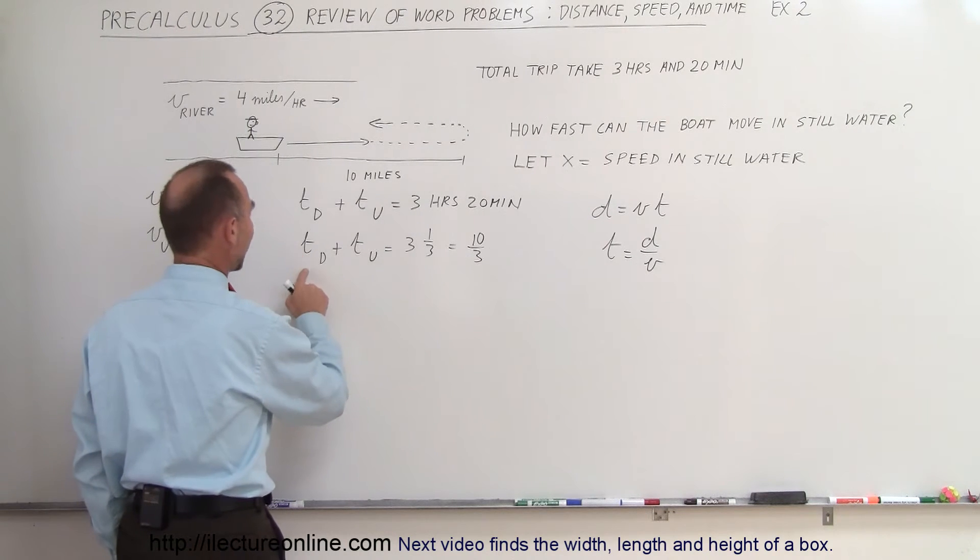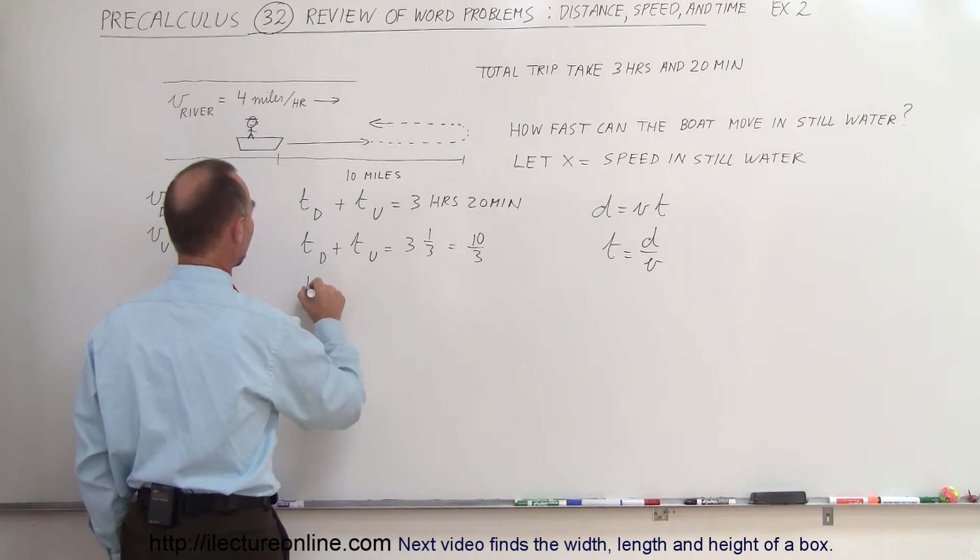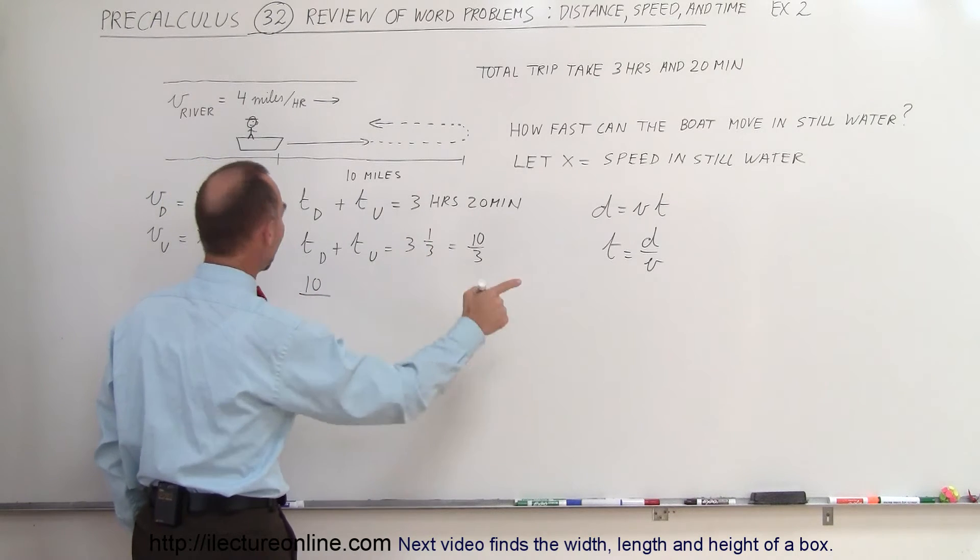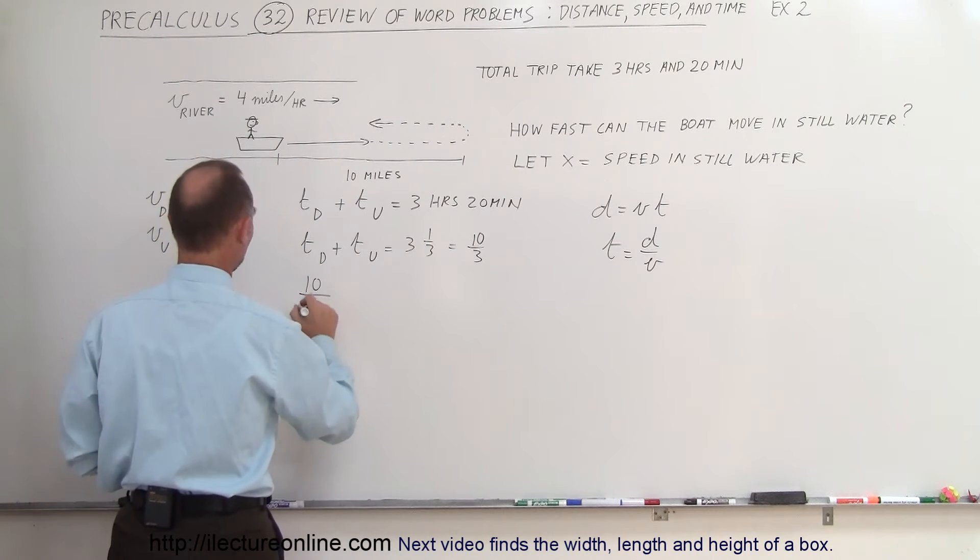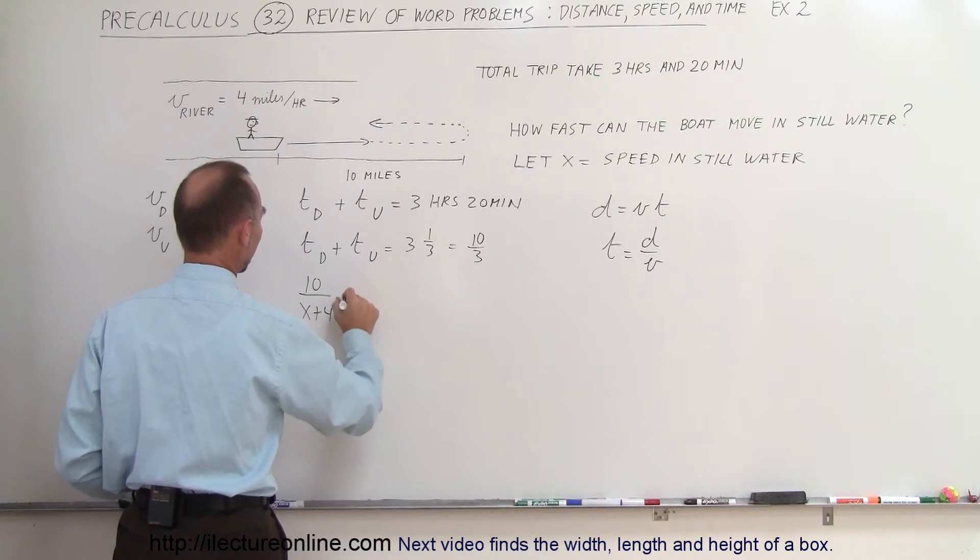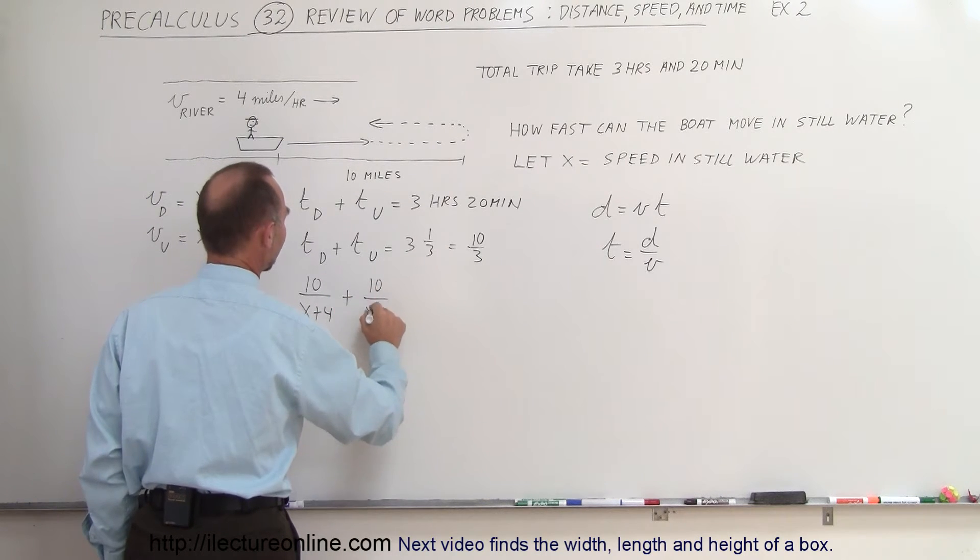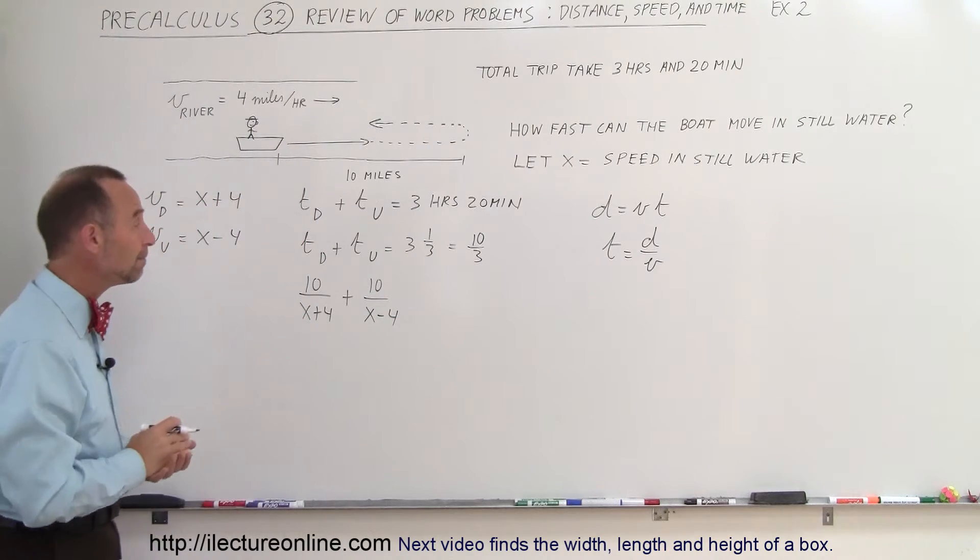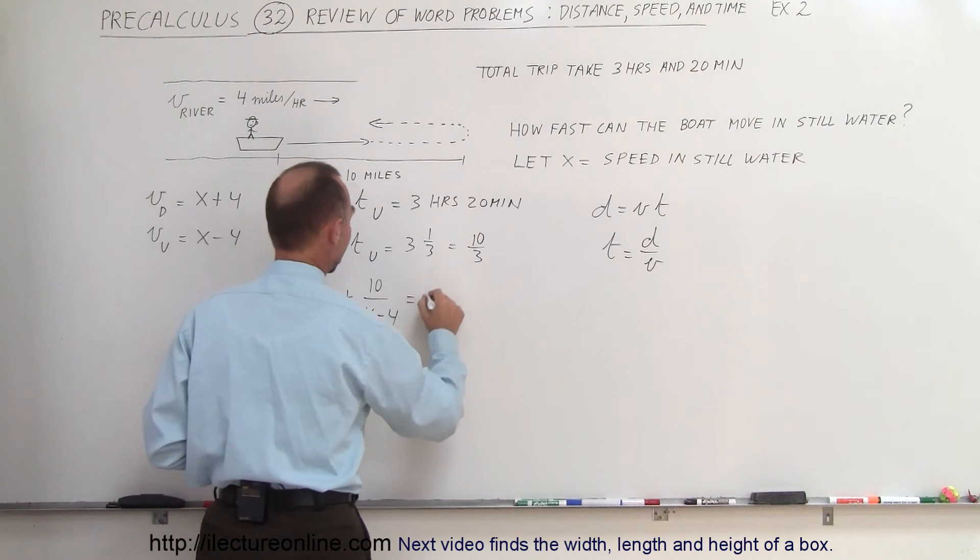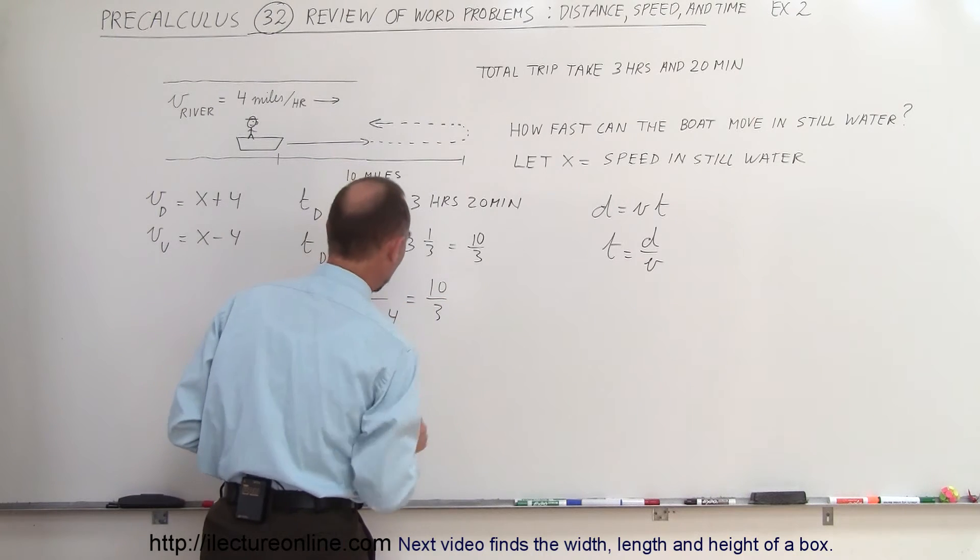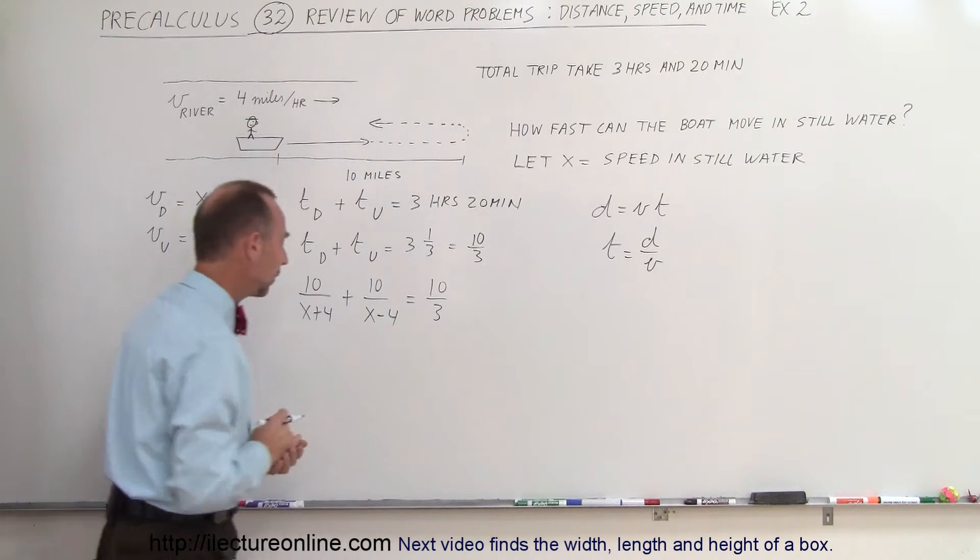So therefore, we can say that the time down is equal to distance ten miles divided by the velocity down, which would be x plus 4, plus the time upstream, which would be ten divided by x minus 4, and that has to equal ten-thirds of an hour.